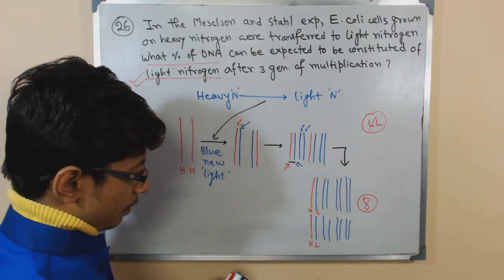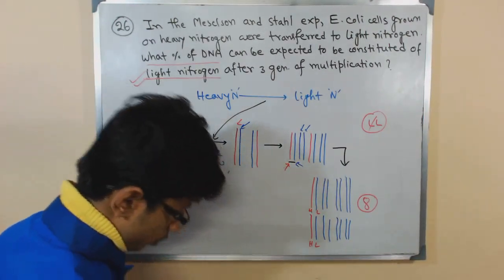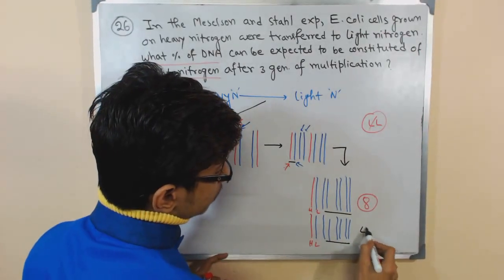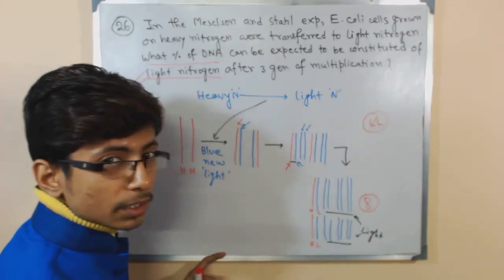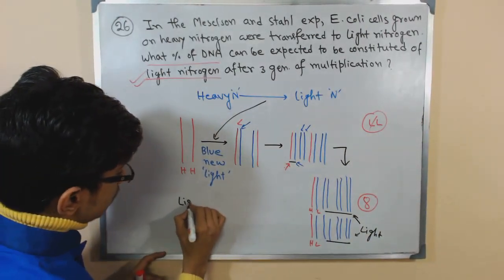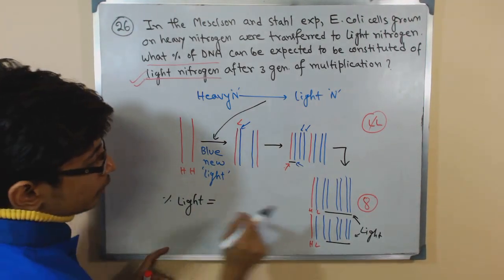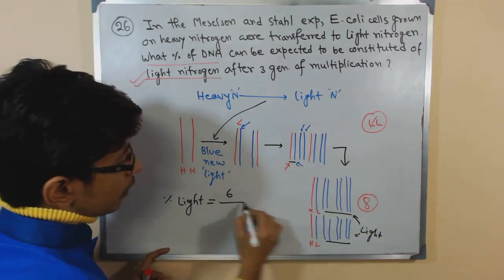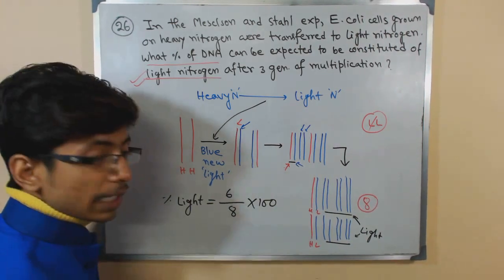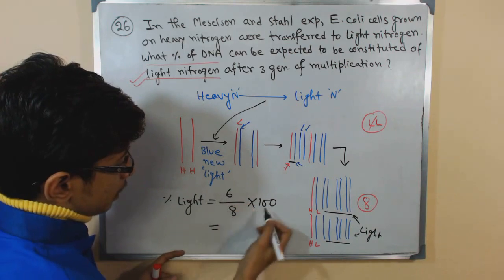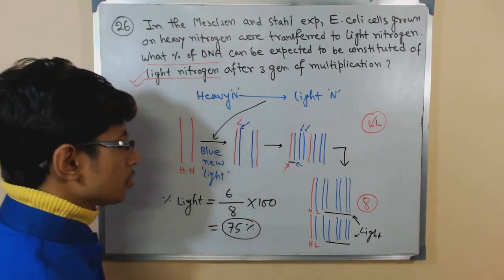Rest of all of them, because blue means light, remember, all of them here are light. So that means the percentage of light here will be 6 out of total 8. Multiply it by 100 because we are calculating the percentage. It is 75%.